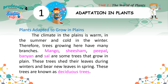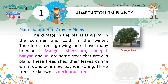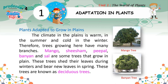Plants adapted to grow in plains: The climate in the plains is warm in the summer and cold in the winter. Therefore, trees growing here have many branches. Mango, shisham, peepal, banyan, and sal are some trees that grow in plains. These trees shed their leaves during winters and bear new leaves in spring. These trees are known as deciduous trees.